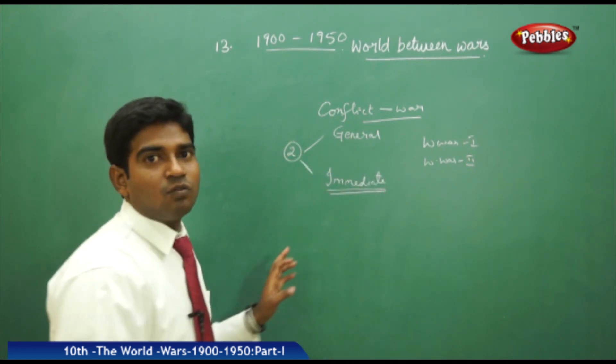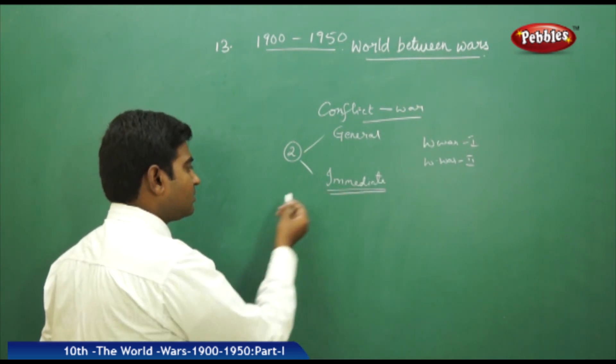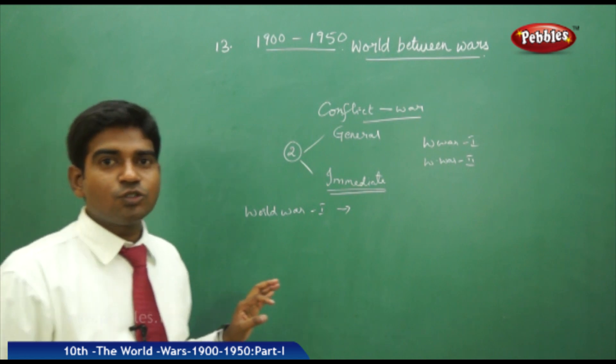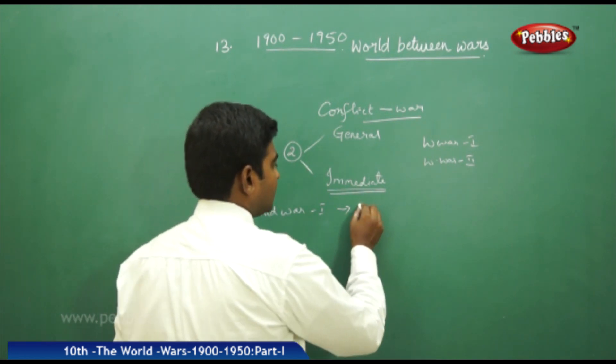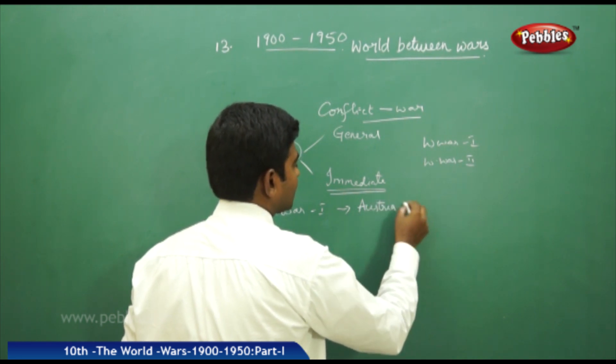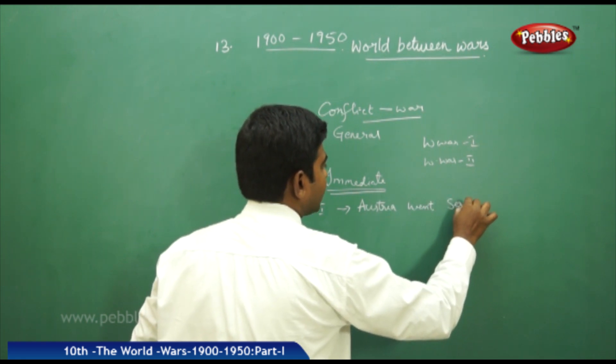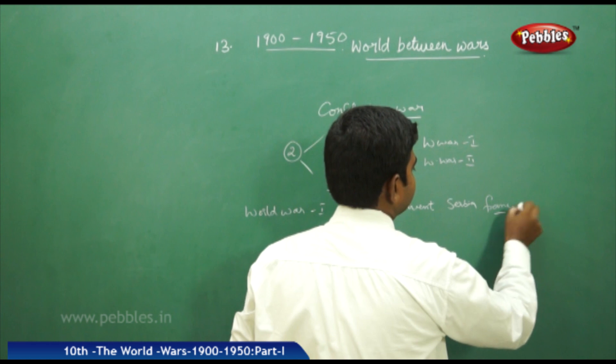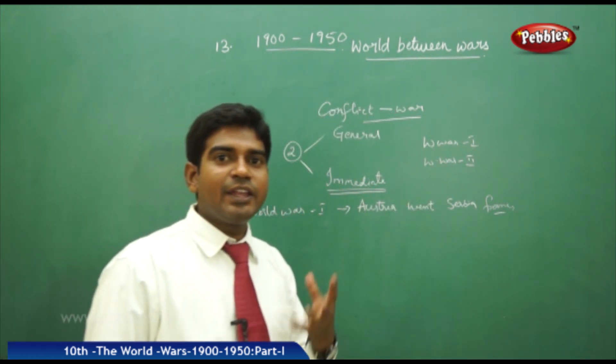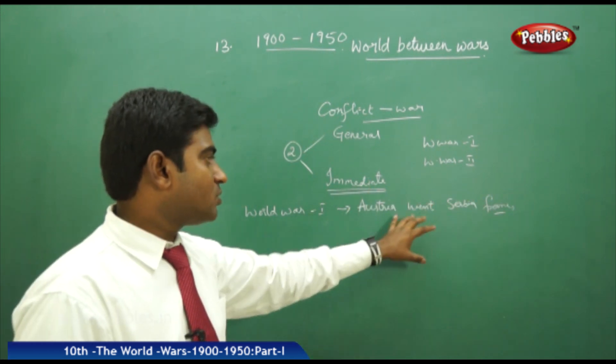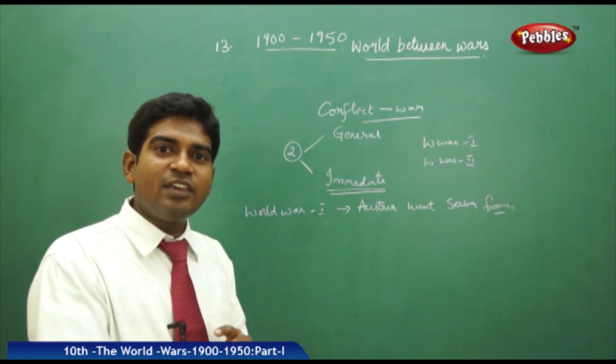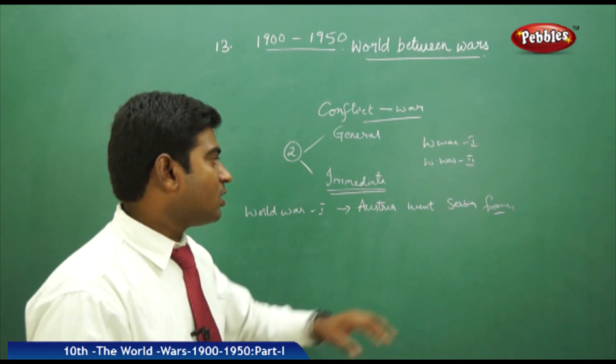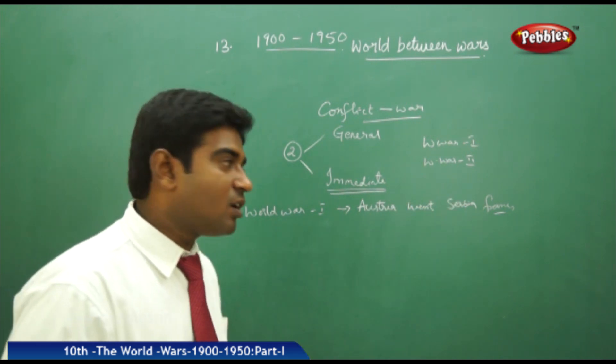Let us see first what are the immediate reasons for World War 1. The immediate reason for World War 1 is the Archduke King of Austria went to Serbia on an official trip. Archduke Francis went to Serbia with his wife named Sofia on an official trip. He is the natural heir of Austria, the person who is going to be the king of Austria. Then on the official visit, when he went with his family, he was attacked by the fanatics of Bosnian Serb.